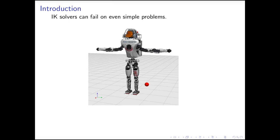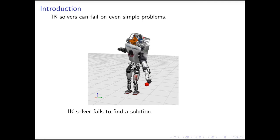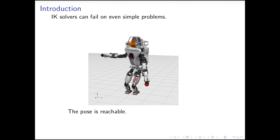Moreover, the IK solvers can fail on even simple problems. Here, we want the robot hand to reach that red sphere. The IK solver fails. This is the base solution it finds. But that red sphere is reachable. The IK solver fails because it only searches within a local neighborhood of the initial guess, while the solution is far away and the initial guess is singular.